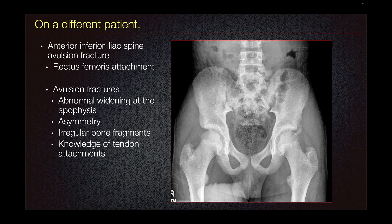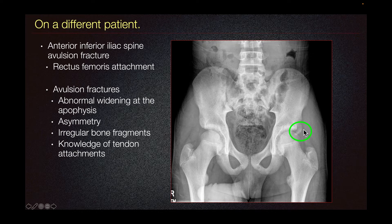On a different patient, here we can see on the anterior inferior iliac spine a bony fragment of the apophysis consistent with avulsion fracture. This is the rectus femoris attachment.